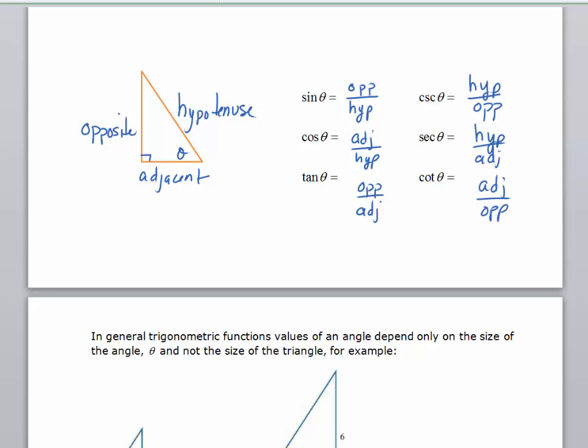There is a mnemonic device that helps me, and I think it helps a lot of students, to remember this. Really, if we remember the first three trig functions with this mnemonic device, we can remember that the latter three are just reciprocals. The mnemonic device is the word SOHCAHTOA. Basically, sine is opposite over hypotenuse. The cosine is the adjacent over the hypotenuse, so a over h.